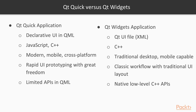Both Qt Quick application and Qt Widgets application are cross-platform, but Qt Quick's highly fluid interface is much more suitable for mobile development. It is also much faster to do UI prototyping in Qt Quick than Qt Widgets. The freedom to make custom widgets or components is also much greater in Qt Quick. As a relatively new Qt technology, you may find some APIs missing in QML. You can always make a C++ module and use it in QML to work around this limitation, though.